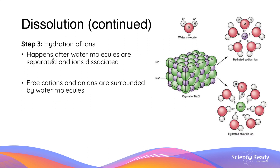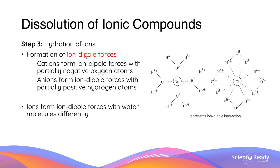The last process involving dissolution of ionic compounds is hydration of ions. This occurs after water molecules are separated and ions are dissociated. In this process, free cations and anions are surrounded by water molecules, as shown in the diagram on the right-hand side. Cations such as sodium are closely surrounded by the partially negative oxygen atoms of water molecules, while anions like chloride are closely surrounded by partially positive hydrogen atoms. The process of hydration is driven by the formation of ion-dipole forces between ions and water molecules, which allows water molecules to closely surround free ions.